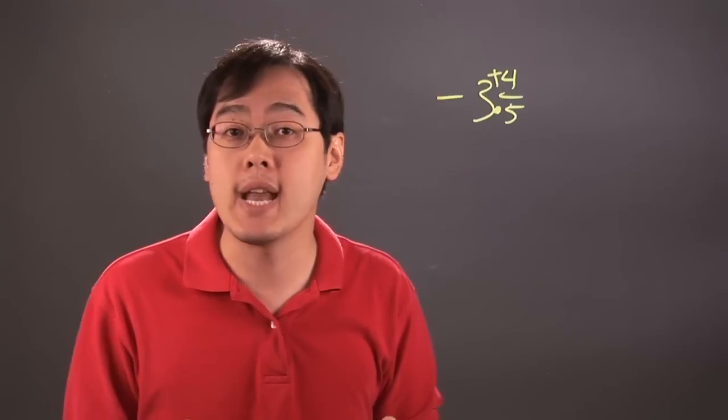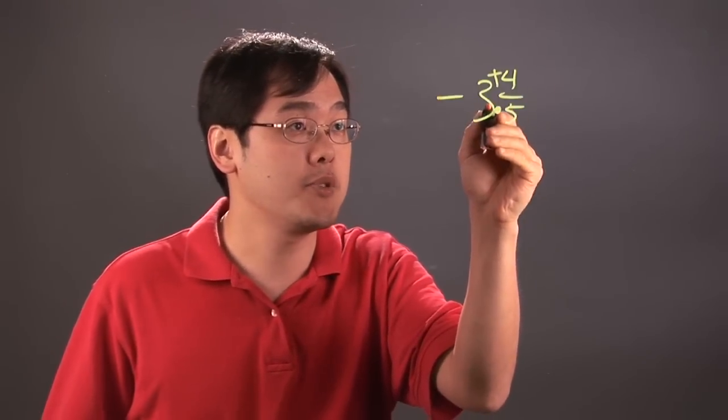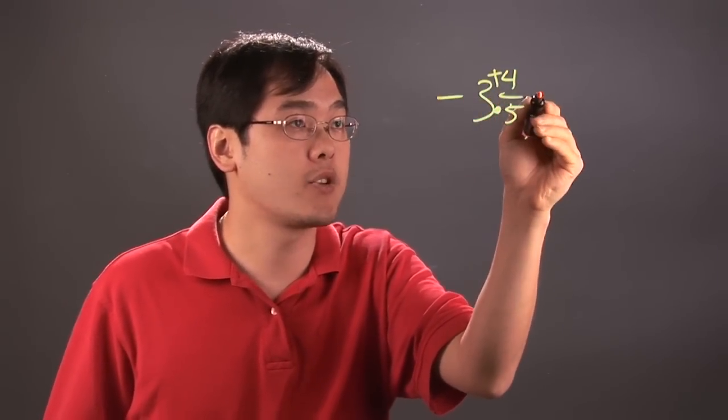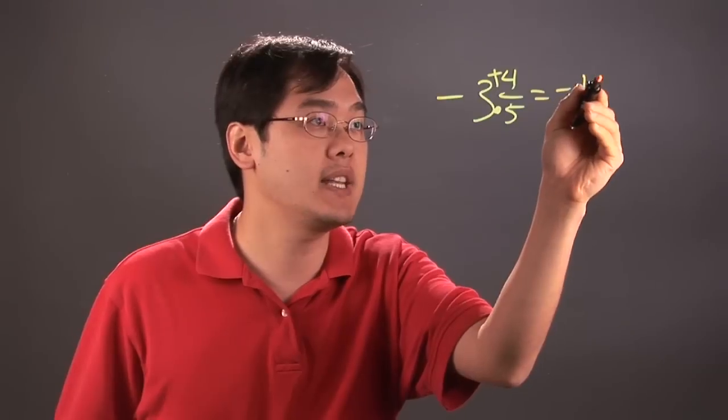It's always that process, positive or negative mixed number. So 5 times 3 is going to be 15, plus 4 is going to be 19, so this will be negative 19.